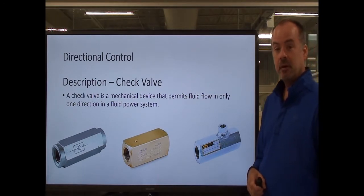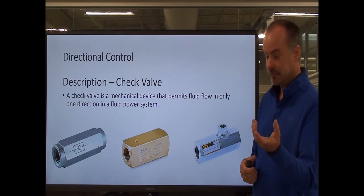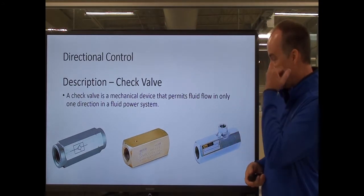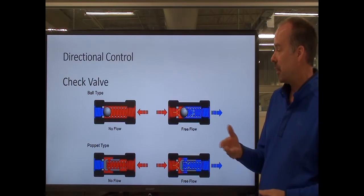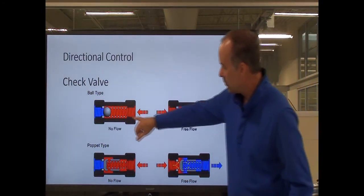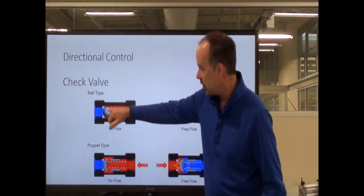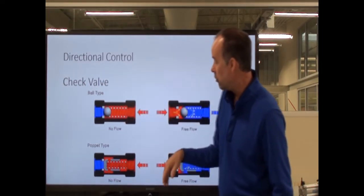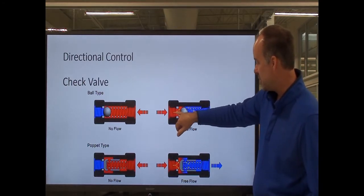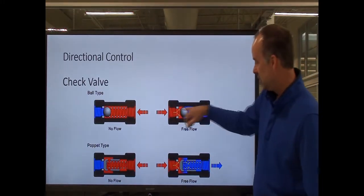Basically, a check valve allows fluid flow in one direction. If I've got a circuit or a place for fluid to flow, it'll allow it to flow in one direction but won't allow it to flow back. I've got two different types illustrated here: a ball type and a poppet type. With the ball type, I've got a ball that seals on a seat. When the fluid tries to go one way, it actually pushes the ball into that seat and seals it off. When I push fluid the other way, it pushes the ball off the seat against the spring and allows fluid to flow.